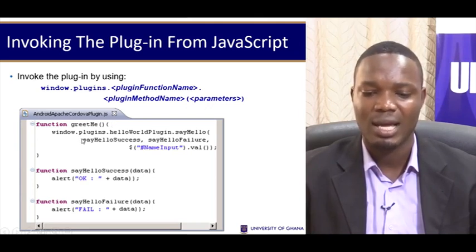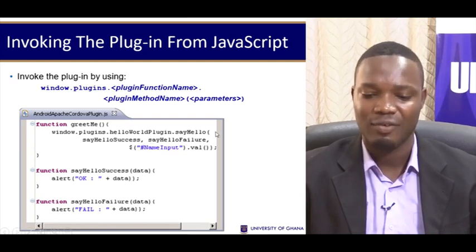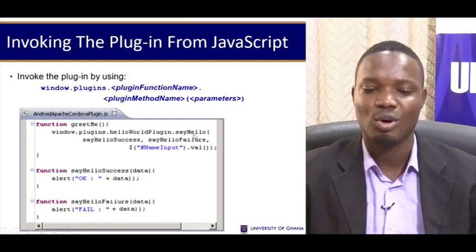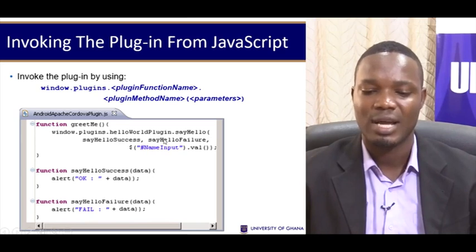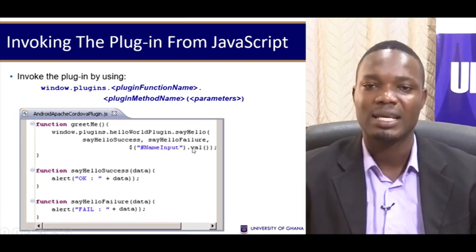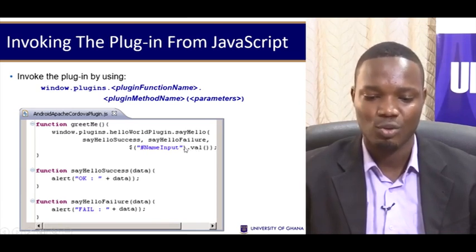An example here: we are calling our say hello. We have window.plugins, then the name of the plugin which is HelloWorldPlugin, and then the method we want to call, which is the say hello method. Then we have the say hello on success callback, the say hello on failure callback, and then we pass in the last parameter, which is the argument that will be sent to our native code.